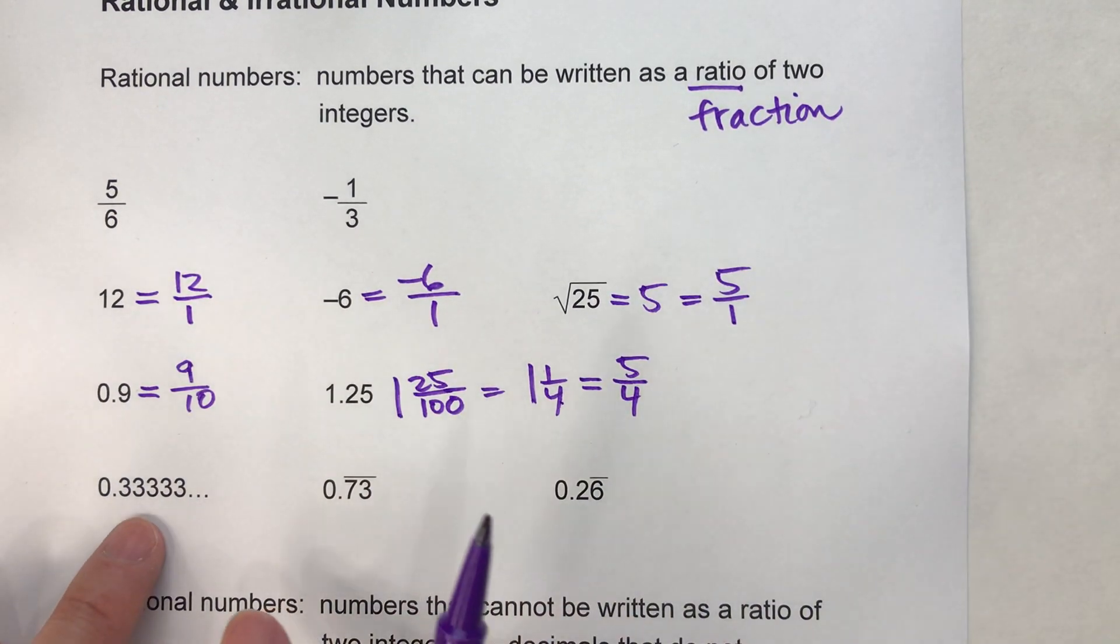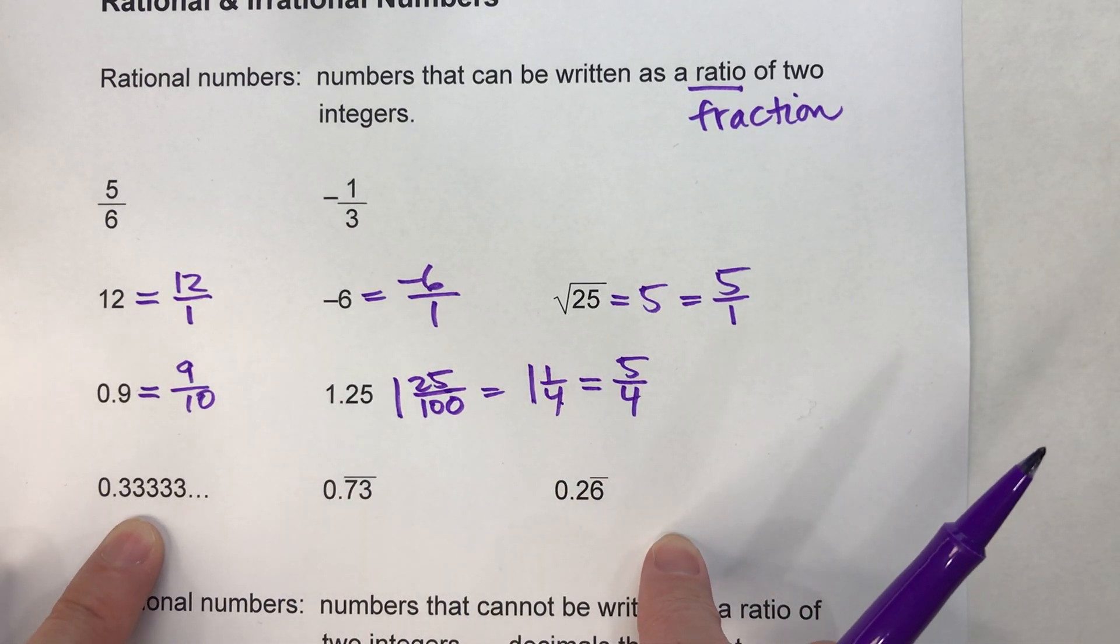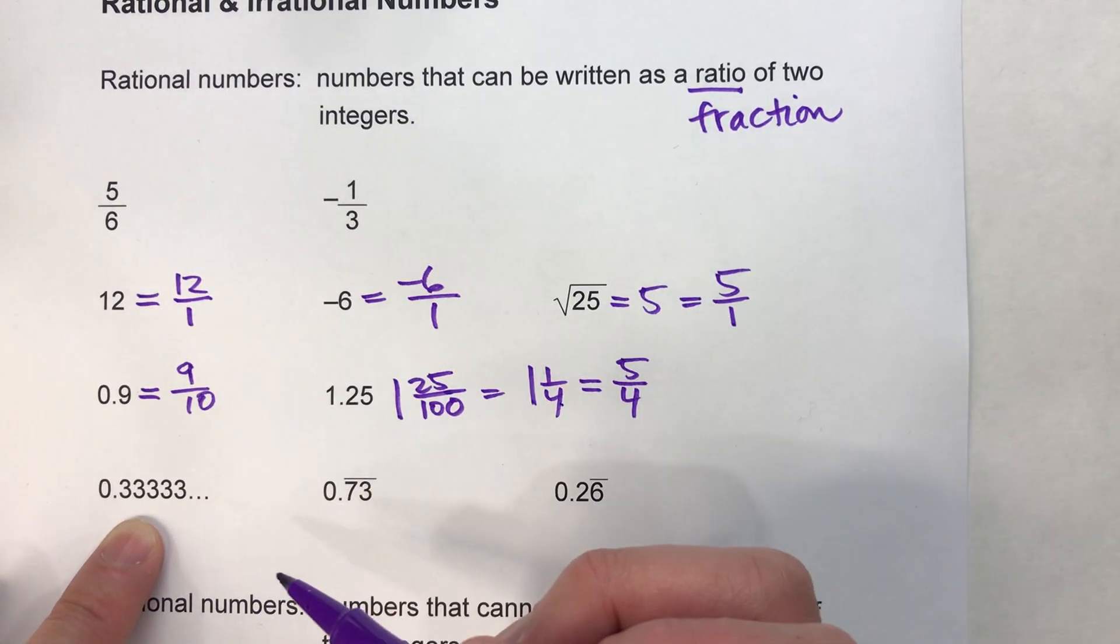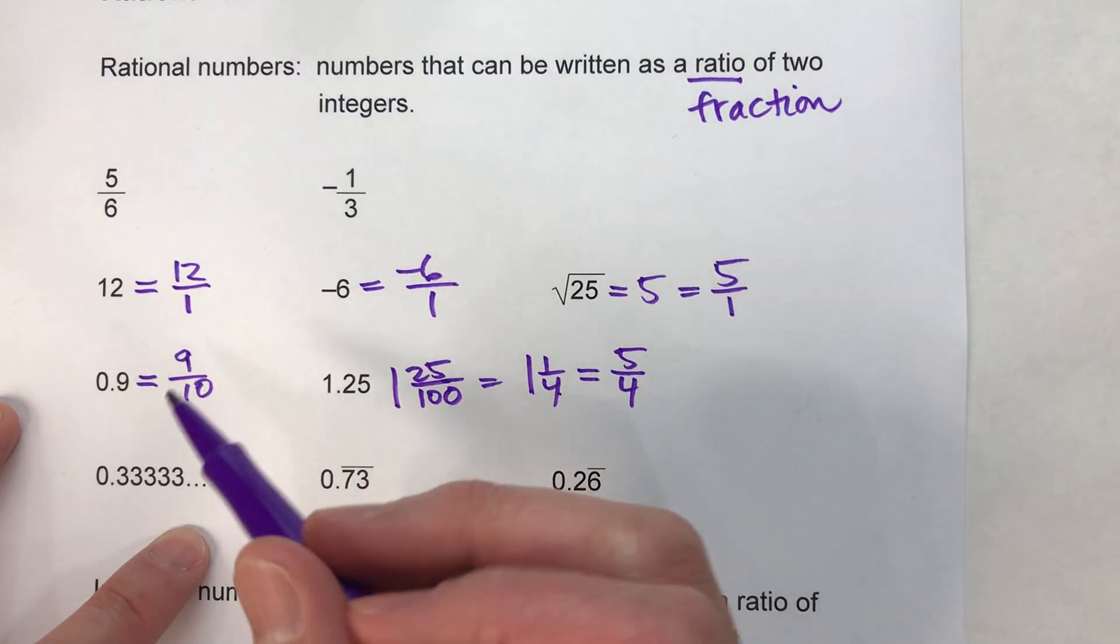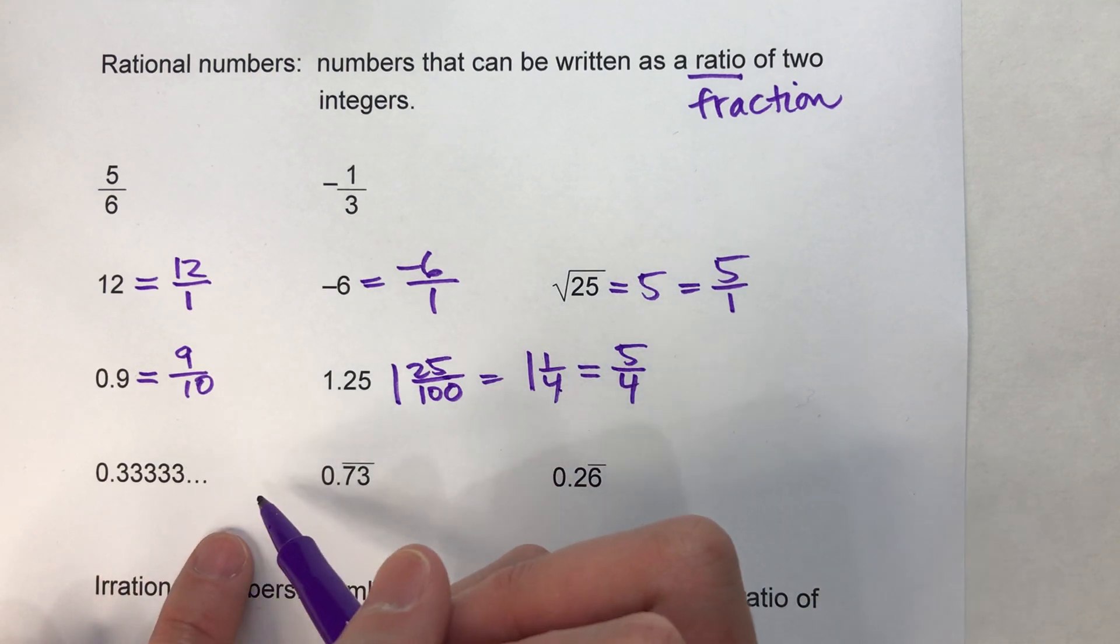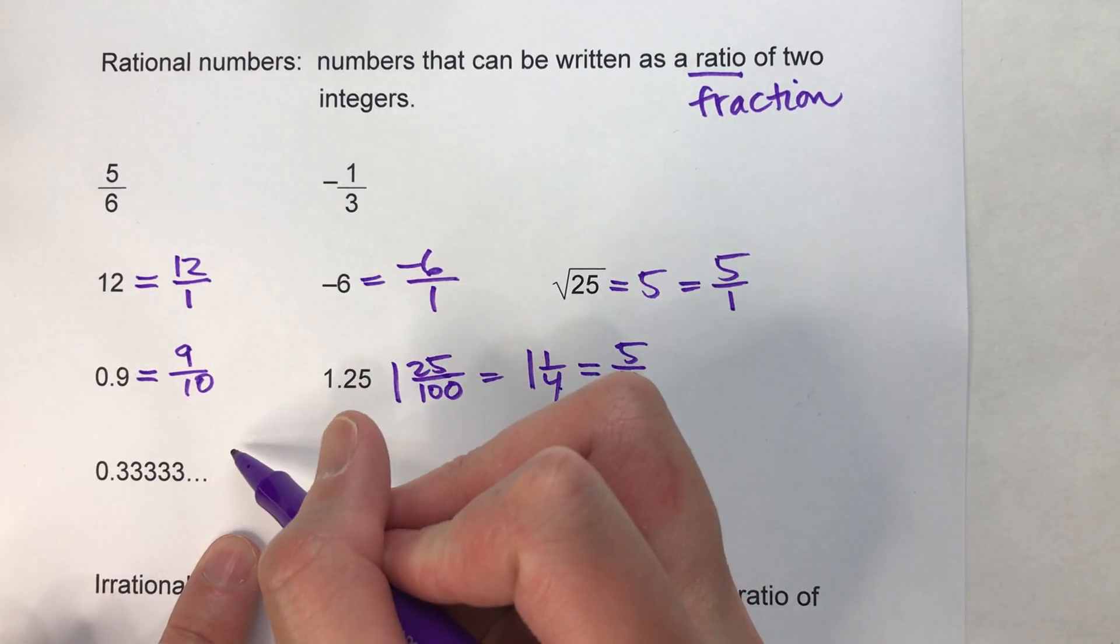Now, decimals that repeat are also rational. This is a little bit trickier. You have to know some tricks here, and I do have videos to show you how to know this. But first off, the easy one: 0.3333... repeating.